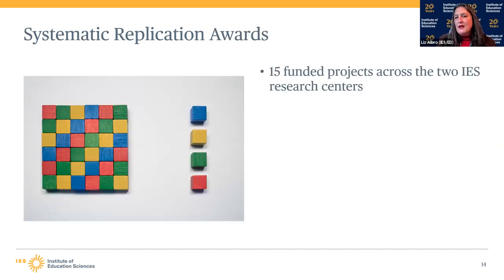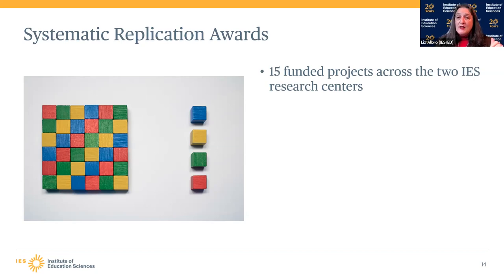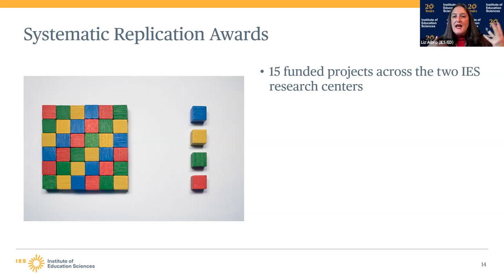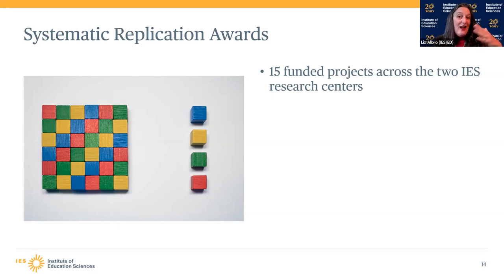When we pulled out systematic replication, we ended up with 15 funded projects across the two IES research centers. Initial awards skewed toward special education — testing whether high-quality interventions with efficacy evidence for general populations could be replicated with students with identified special education needs. As the years have gone by, it's become more balanced: currently eight projects in NCSER and seven in NCER. We're excited to see what we learn and how this data can be archived for future use.